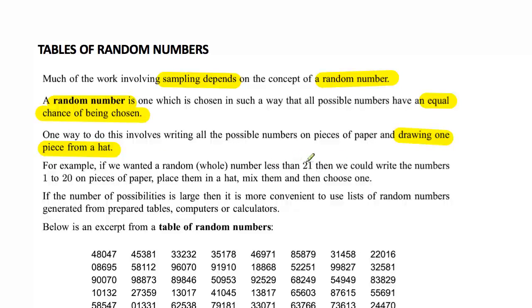They also give an example that if you want a number less than 21, then you write the numbers 1 to 20 on a piece of paper, put them in a hat, mix them around, choose one out, and you should have a random number.